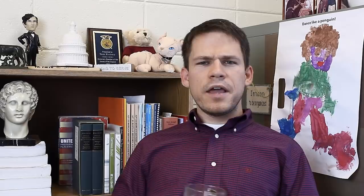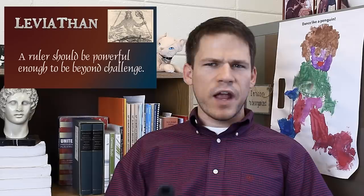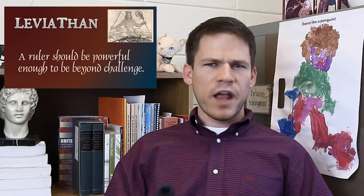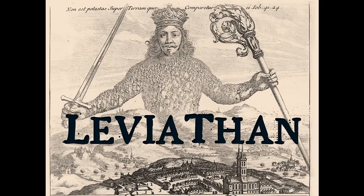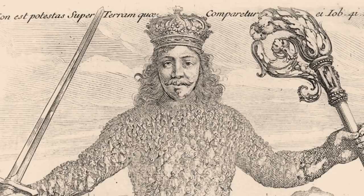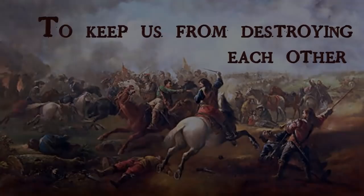The idea here is that we need a ruler who is strong enough that he is beyond challenge — that people think, 'I could not possibly mess with that guy' — because that is the only thing that keeps us from tearing each other apart. This Leviathan, who looms large over everything, larger than the city — you can see his chain mail is made of people — is so big as to be beyond challenge, and that will make us behave ourselves when we otherwise would not, and will keep us from destroying one another.